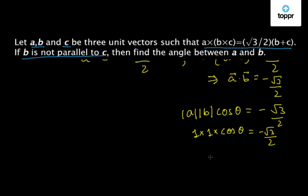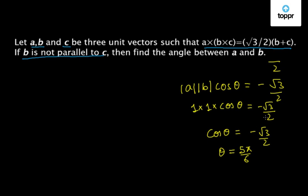From here, we get cos theta is equal to minus root 3 upon 2. So, we can write theta is equal to 5 pi by 6. So, the angle between A and B is equal to 5 pi by 6.